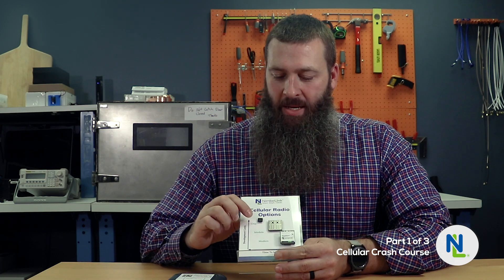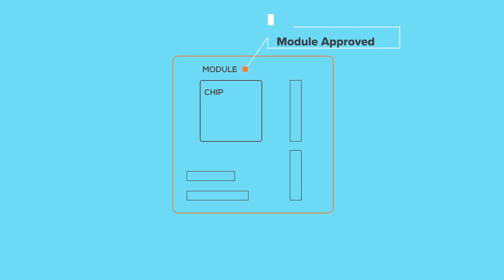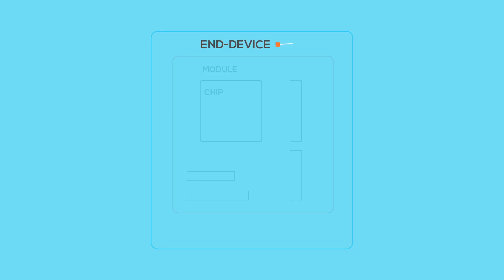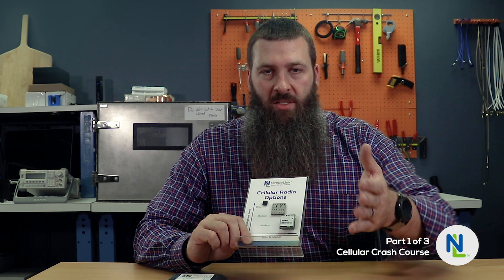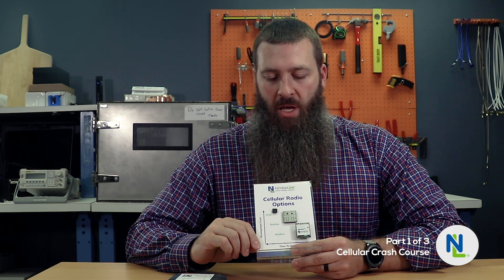The main reason there are these three categories is that each one relates to a level of certification. A chip has to go through certification to be approved to work on a particular carrier or in a particular part of the world. That approved chipset goes into a module, which then has to go through its own level of certification. That certified module will then be put into an end device, and yes, there is one final level of testing and certification at the end device level. So as a device developer, you have to look at these options and determine what makes the most sense — are you deploying millions, hundreds of thousands, or tens of thousands of devices? We have other videos that go deeper into choosing the right radio, so check the link below.